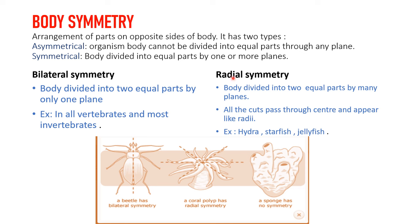The second is radial symmetry. Here there are different planes — as seen in the diagram of coral polyps, there are many planes, and in every plane the body is divided into equal halves. Examples include Hydra, Starfish, and Jellyfish.